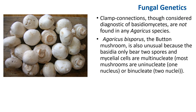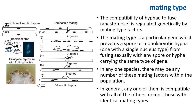There are exceptions. Clamp connections, though considered diagnostic for basidiomycetes, are not found in Agaricus species. For example, Agaricus bisporus — the button mushroom — is unusual because the basidia also bear only two spores, which is why it's called bisporus. The mycelial cells are multinucleate — most mushrooms are uninucleate (one nucleus per cell) or binucleate (two nuclei per cell), but the bisporus can have three, five, or more.